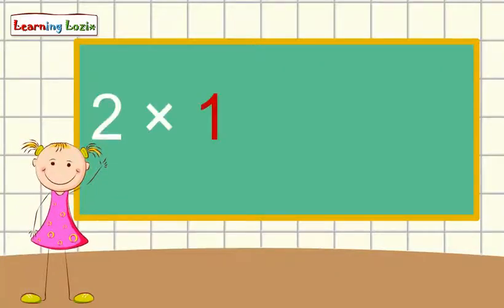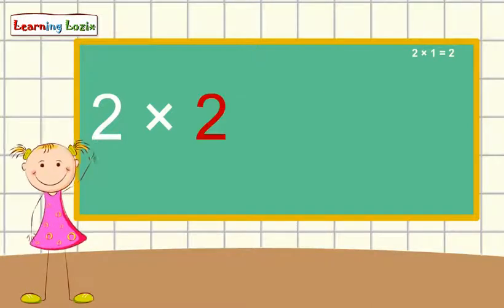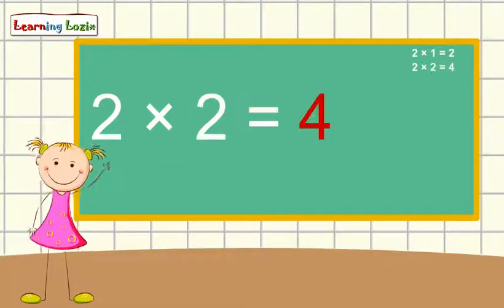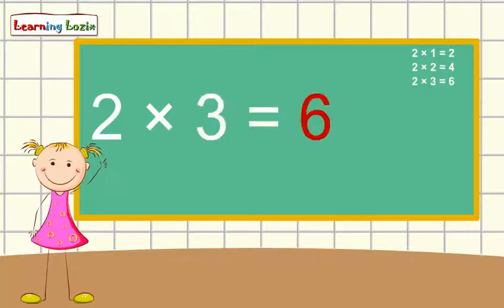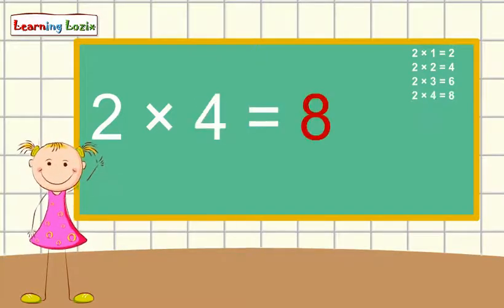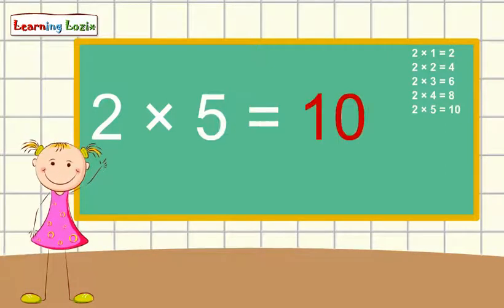Two times one is two, two times two is four, two times three is six, two times four is eight, two times five is ten.